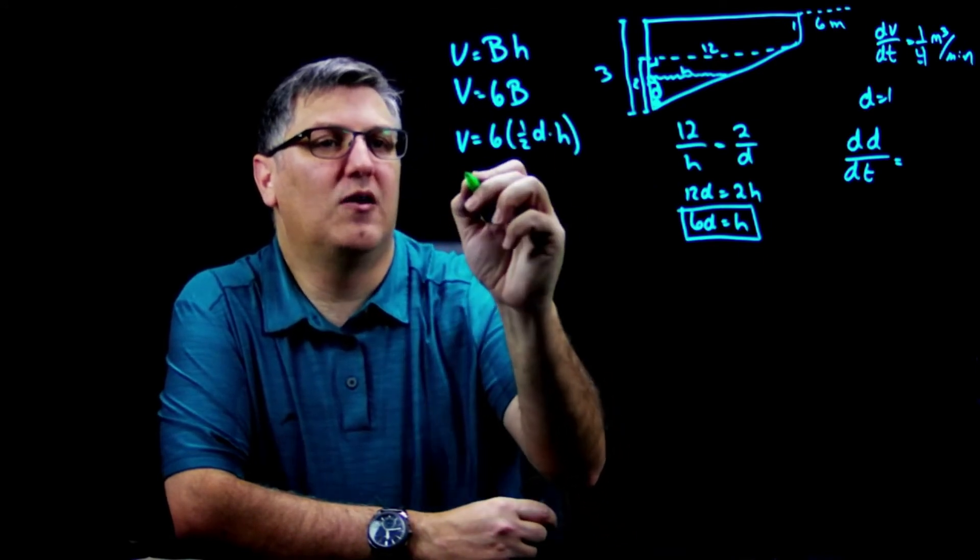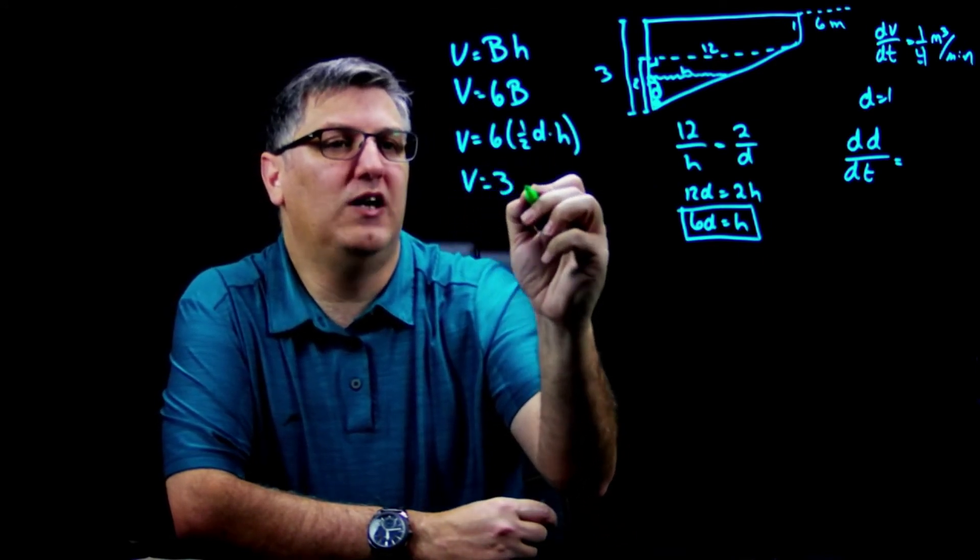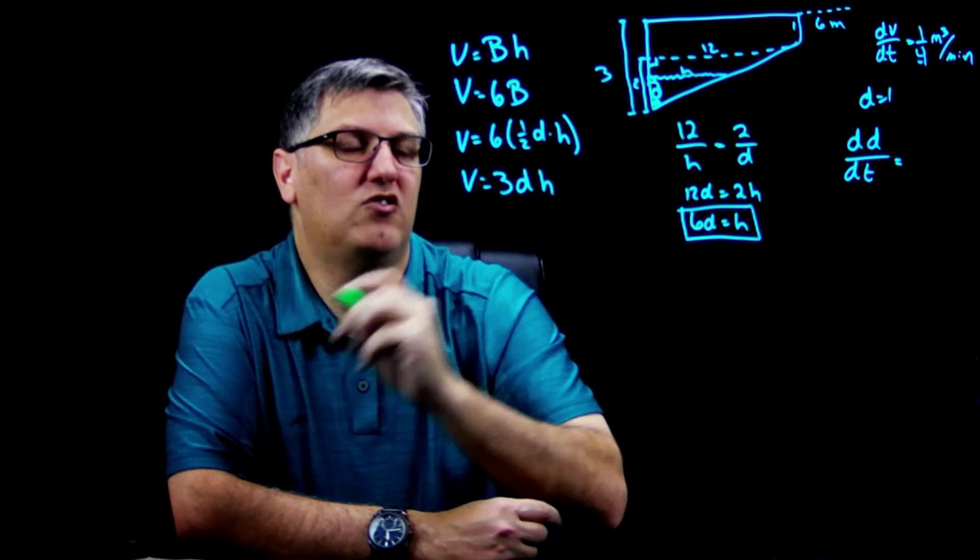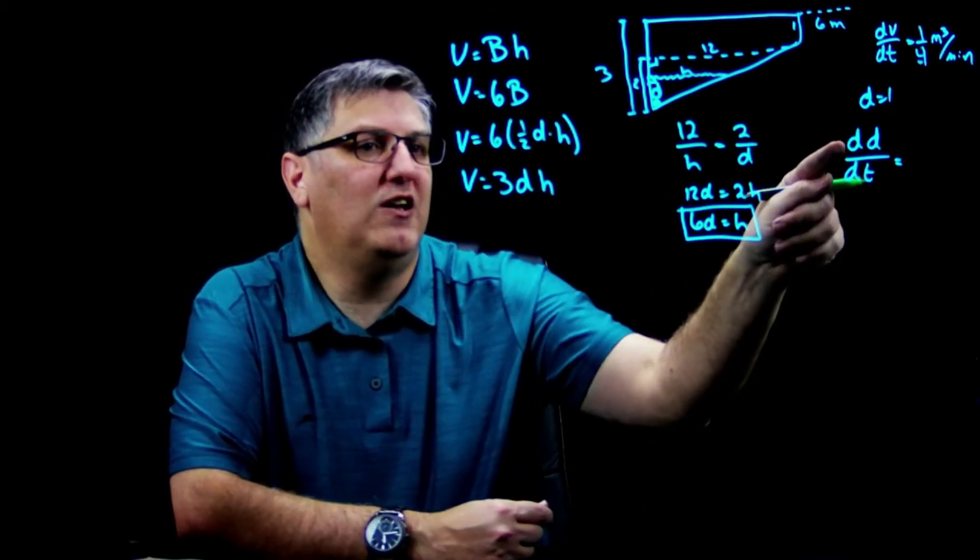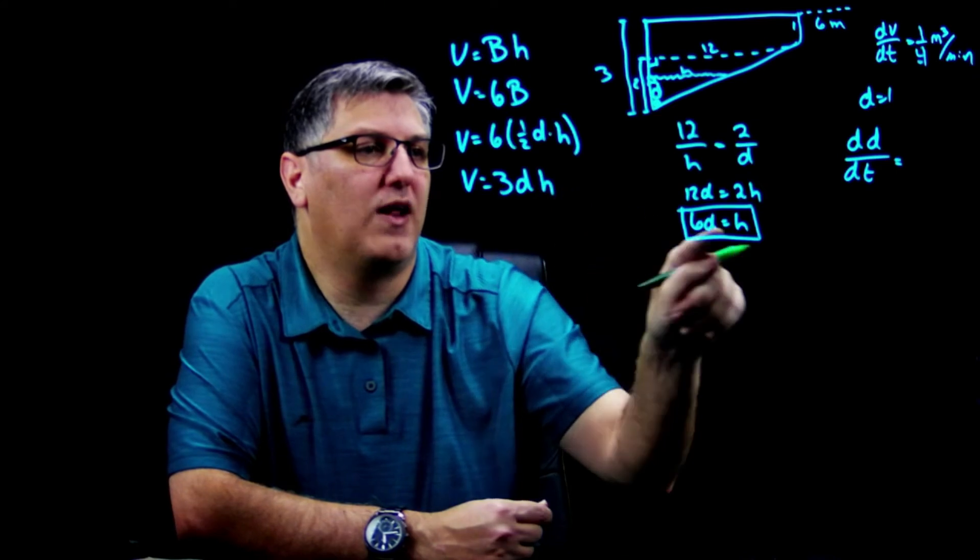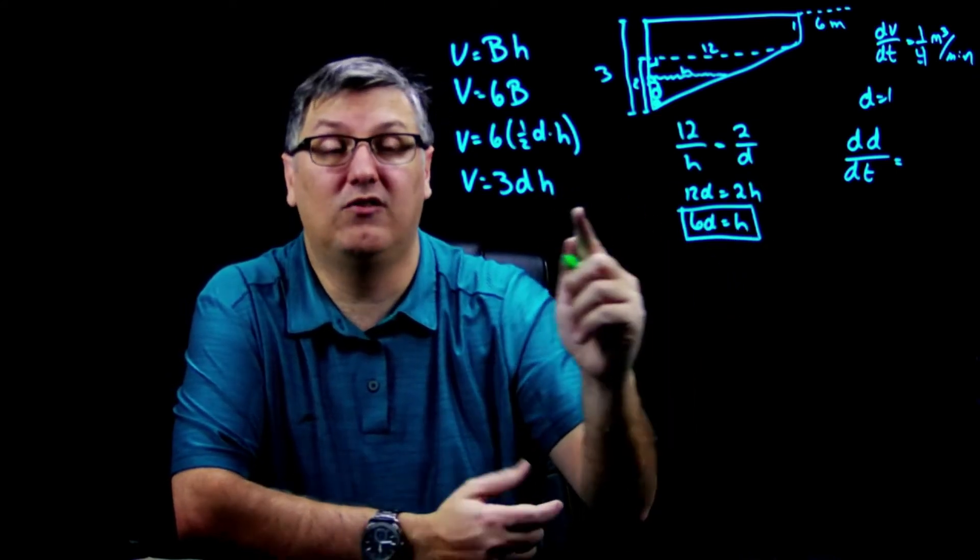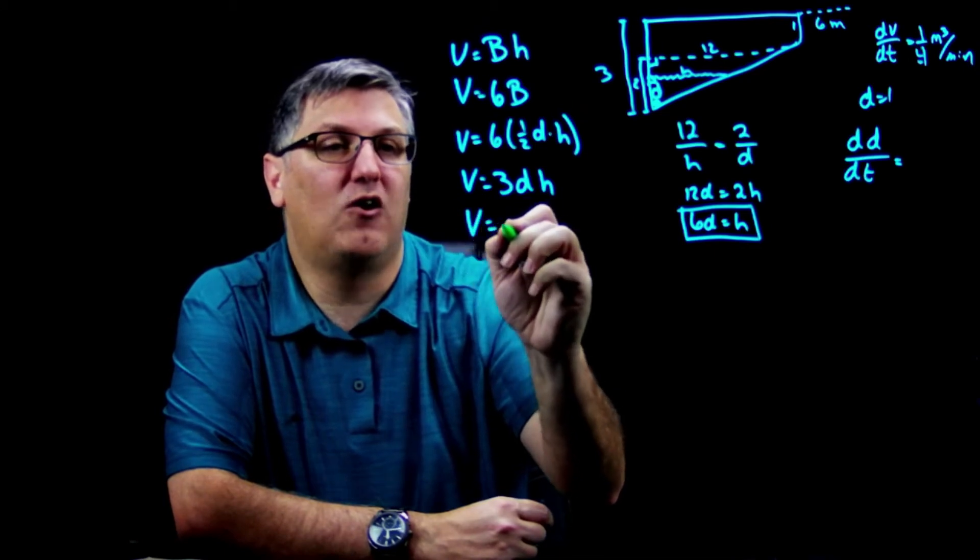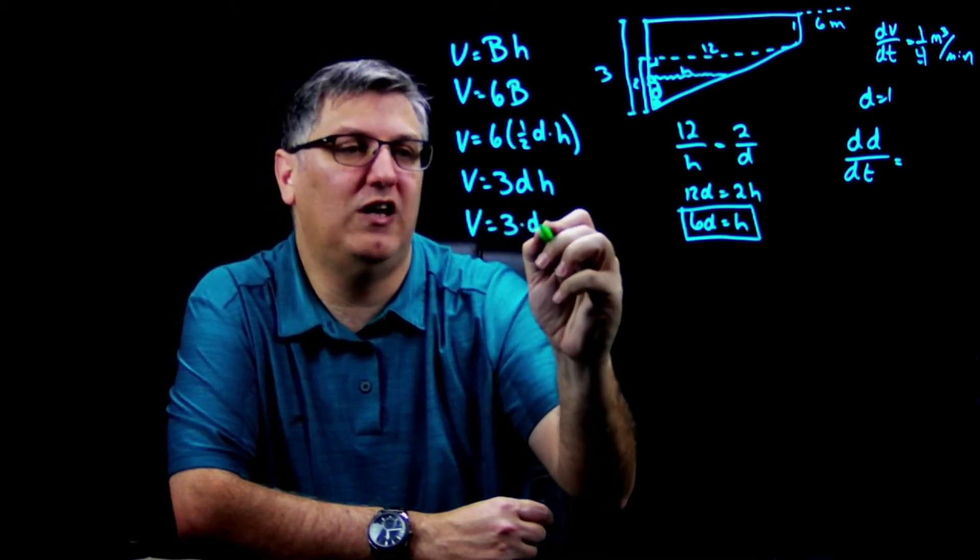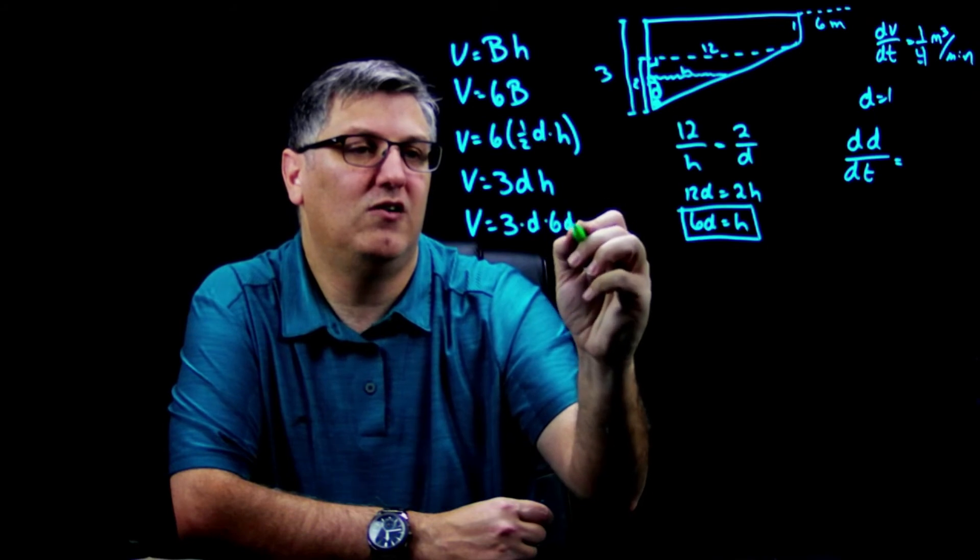Okay, well I'm looking for dd/dt, so I need to get rid of h. But I know h = 6d. That's a basic substitution. I get V = 3 × d × 6d.